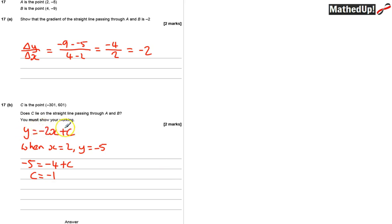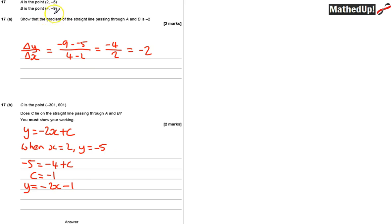I can now write down the particular equation using C equal to negative 1. So that means Y is equal to negative 2X take away 1. The equation of the line passing through these points is Y equals negative 2X minus 1.